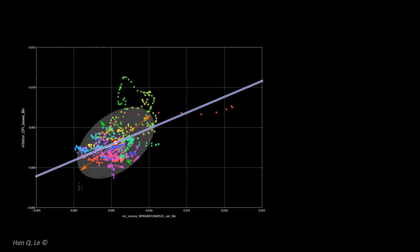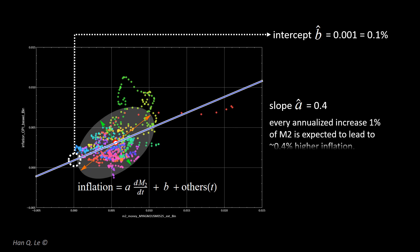The rough linear model fit result means the follow. The intercept value, B hat, means that even if there is no increase of M2, there will always be a baseline inflation of 0.1%. The slope value, A hat, being 0.4, means that every 1% increase of M2 can lead to 0.4% higher inflation. The 2020 M2 increase is truly a statistical outlier. The 2022 inflation as of May is still below the model expectation.